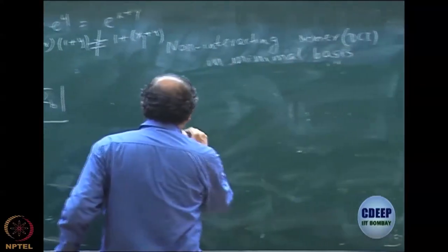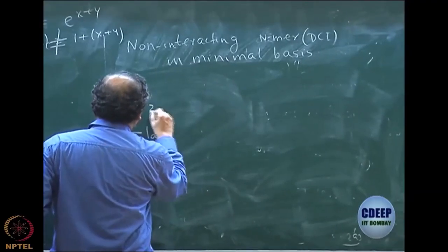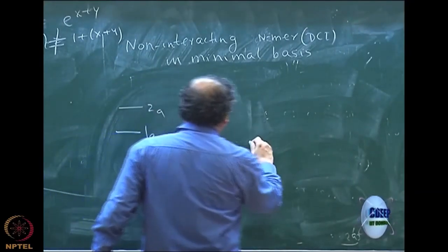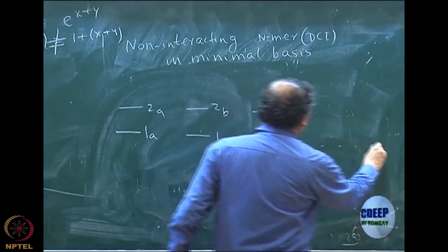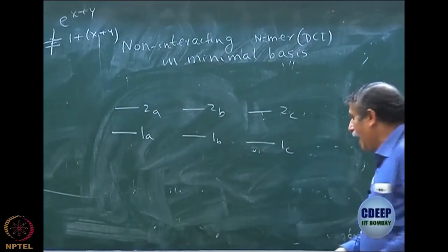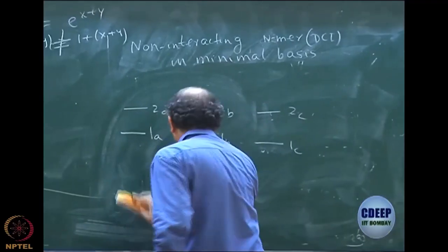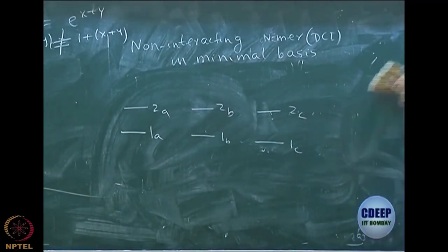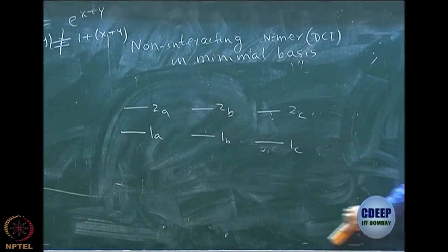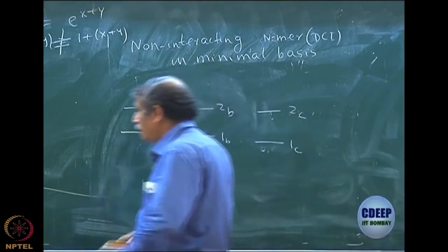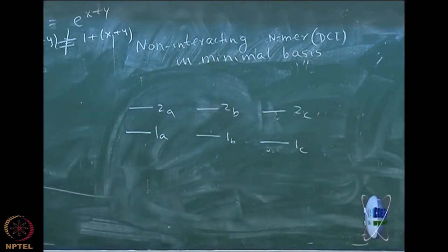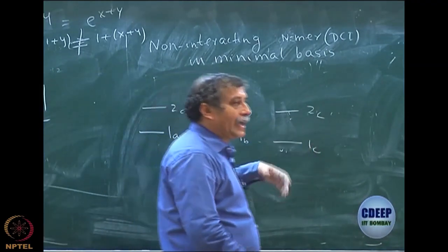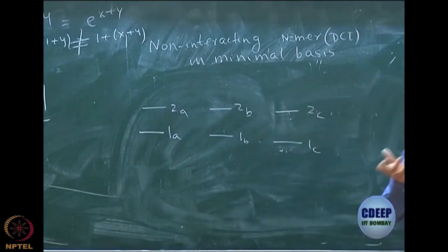So, I will have now 1A, 2A, 1B, 2B, 1C, 2C, etc. — A, B, C, D, etc. — and they are non-interacting, which means each of them is far apart from the other. So, once again, if I do the exact calculation, the energy of this system will be n times the energy of the monomer.